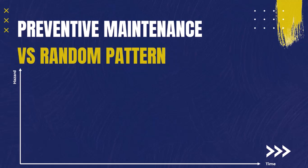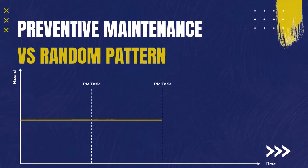Now let's check the same for the random failure pattern. In a totally random failure pattern the hazard is constant over time. When we interfere by changing parts, the hazard curve starts from the beginning again at exactly the same level. So we have spent money, time, and resources without reducing the hazard of failure at all — which is a waste of resources.